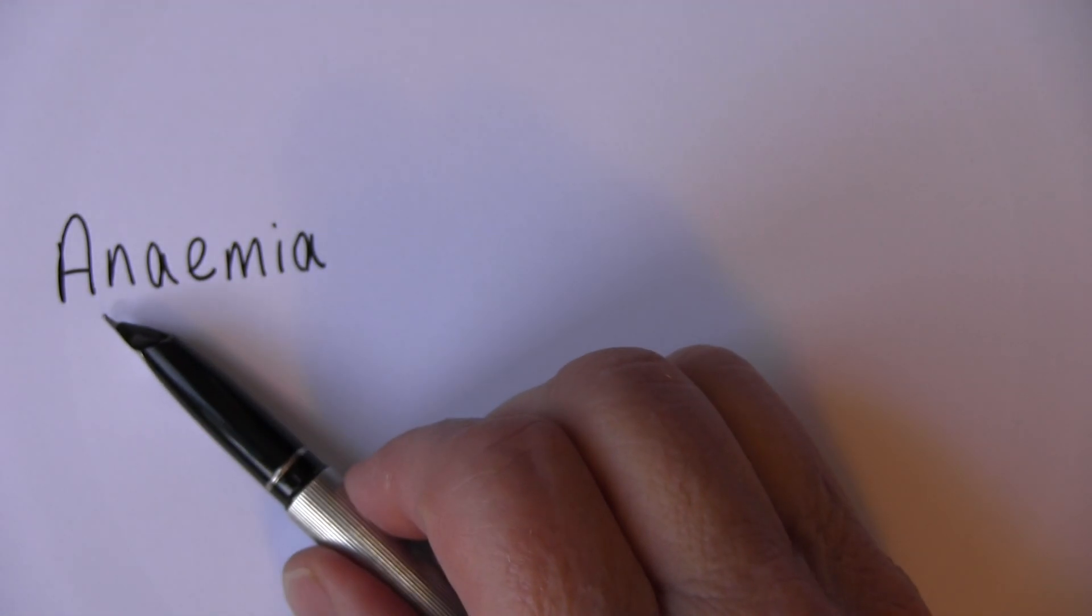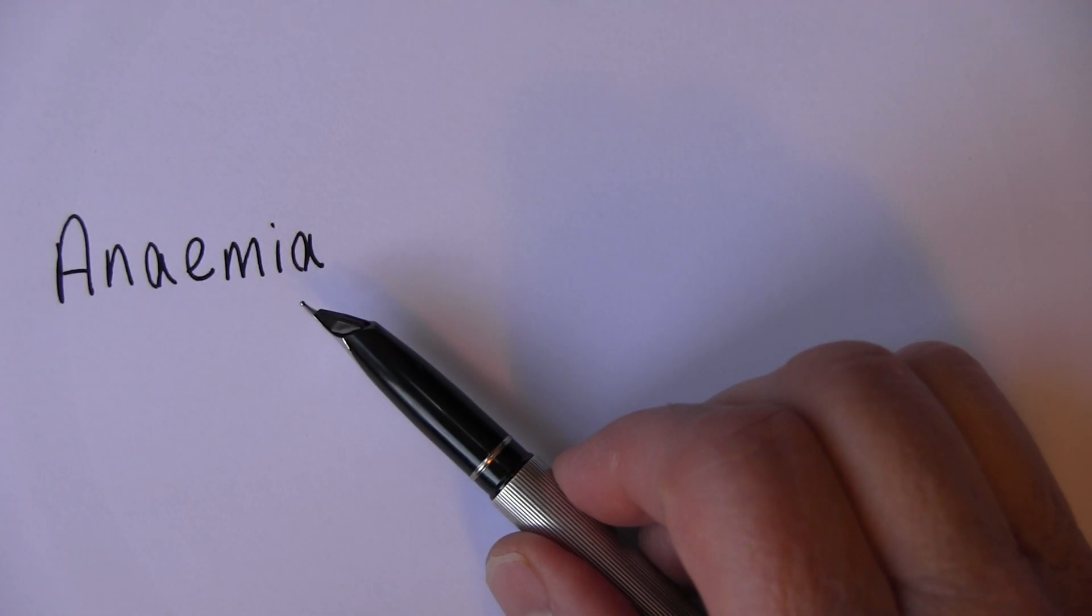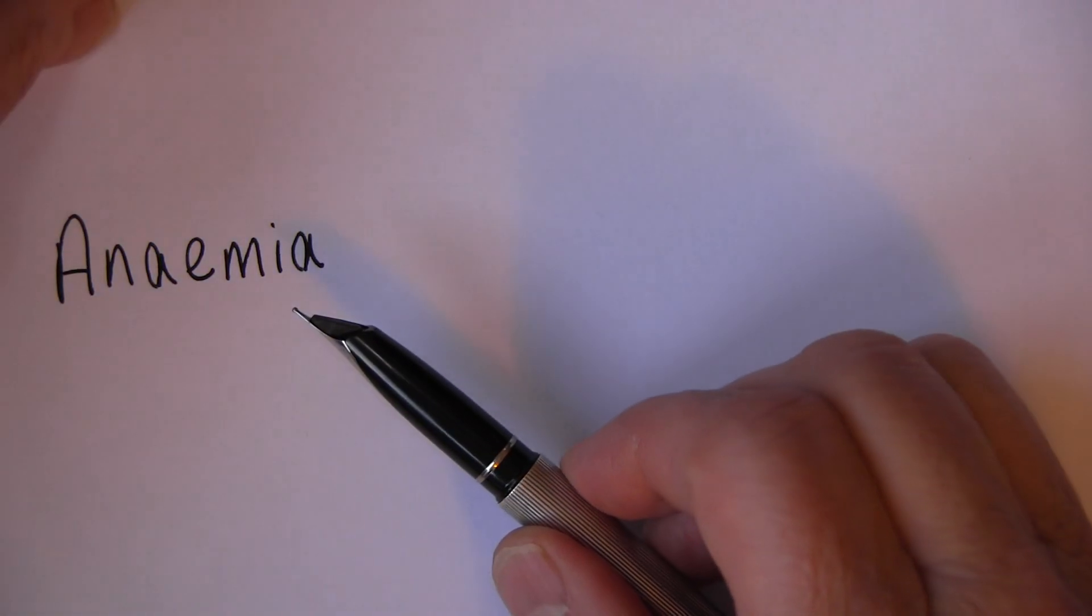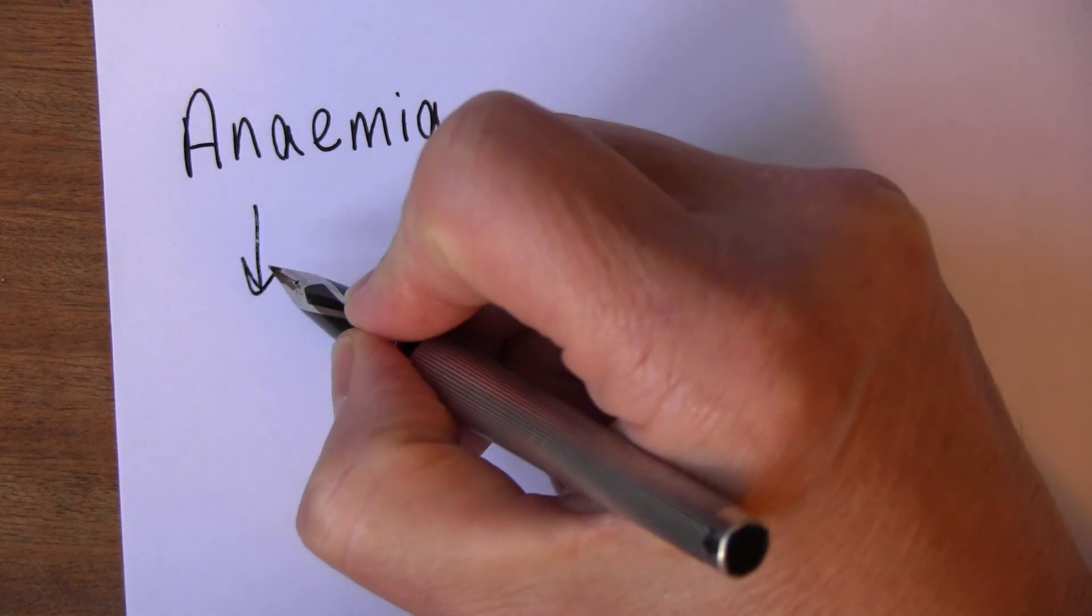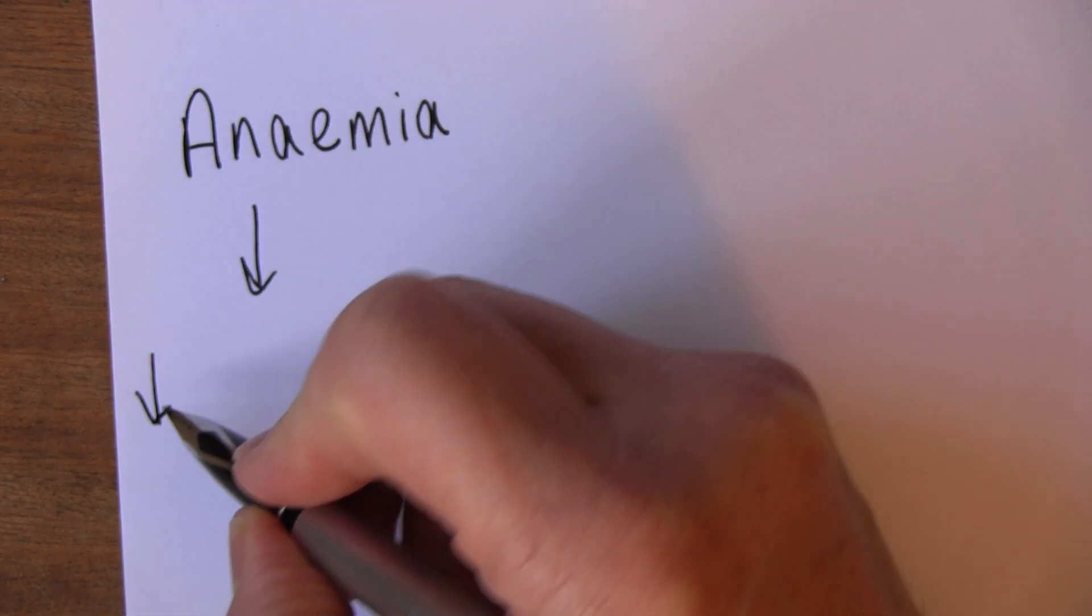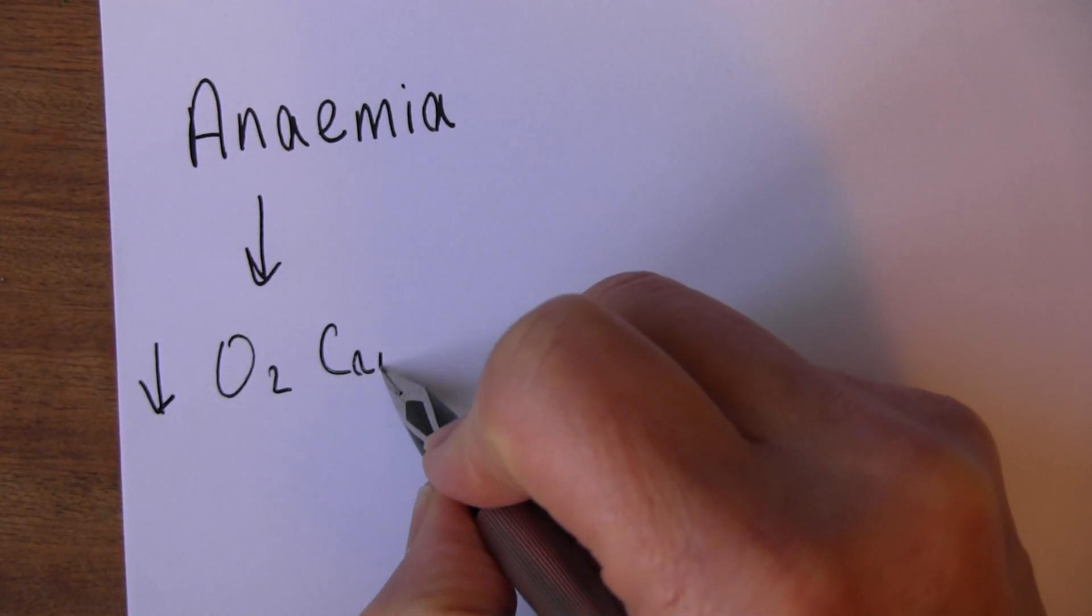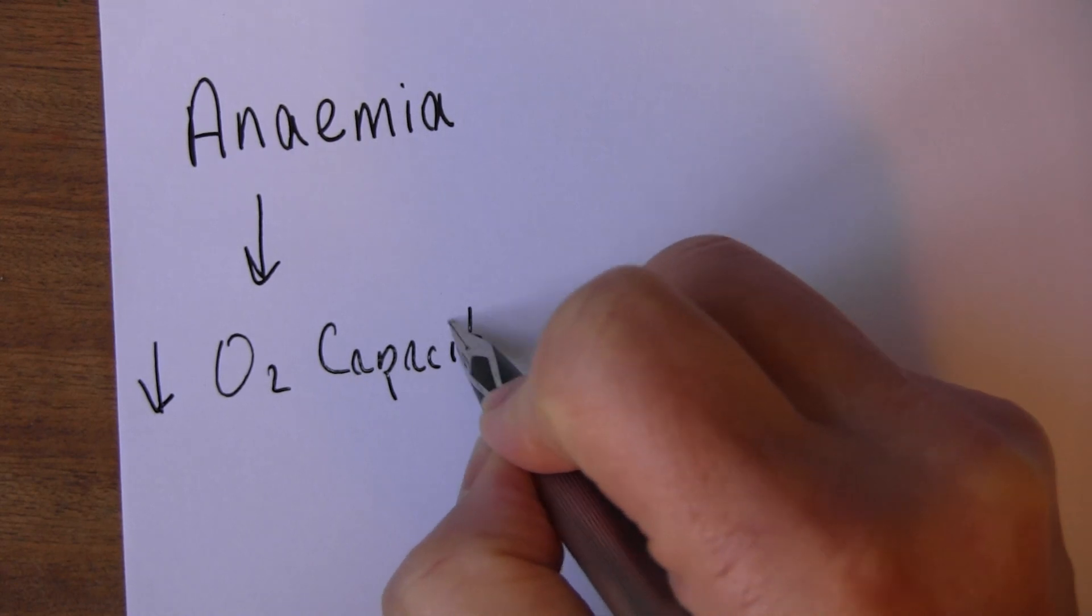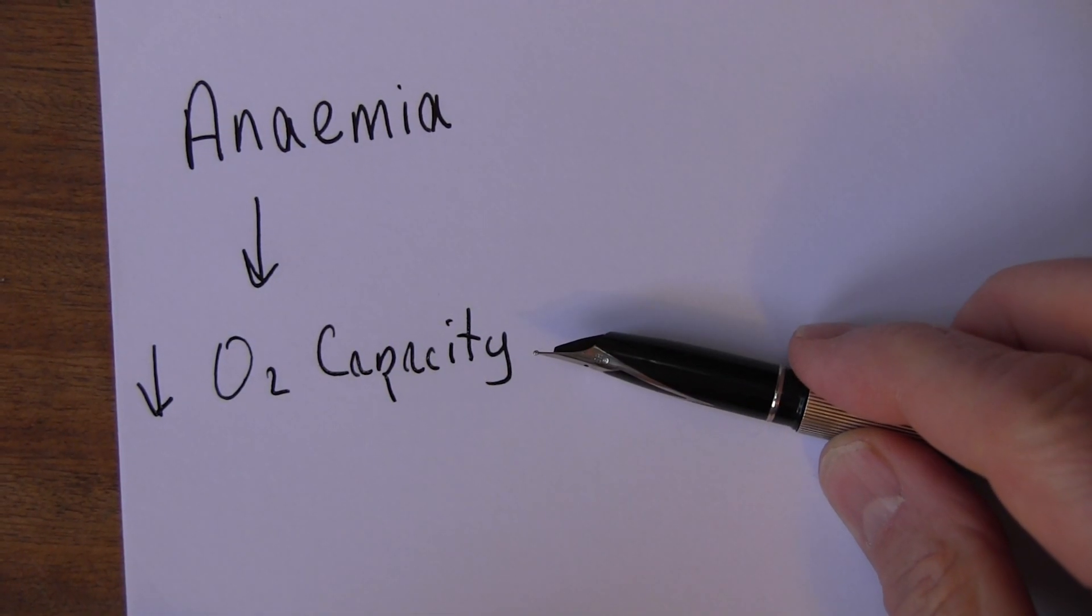Welcome to this video on anemia. The prefix 'an' means without and the suffix 'emia' means relating to the blood. What anemia actually is, it's a reduction in the ability of the blood to carry oxygen, so you get reduced oxygen carrying capacity.